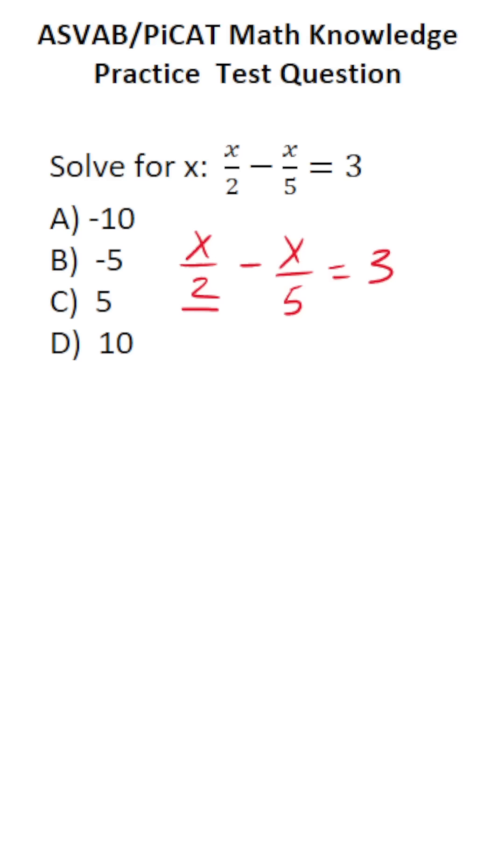In this case, we're looking for a common denominator between 2 and 5. 2 and 5 both go into 10, so that's going to be our common denominator. In other words, we're going to rewrite this equation with a denominator of 10.